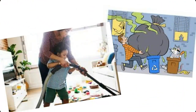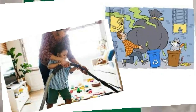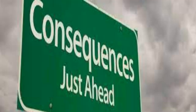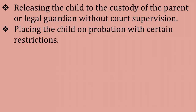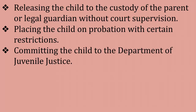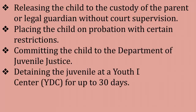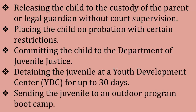Or not abiding by the reasonable commands of a parent or other adults. The consequences of unruly include releasing the child to the custody of the parent or legal guardian without court supervision, placing the child on probation with certain restrictions, committing the child to the Department of Juvenile Justice, detaining the juvenile at the Youth Development Center for up to 30 days, or sending the juvenile to an outdoor program or boot camp.